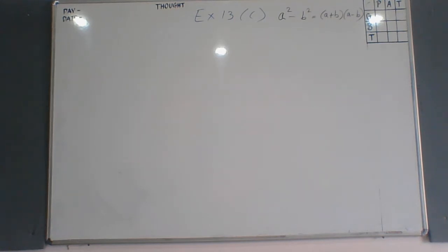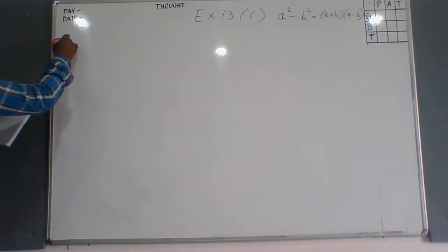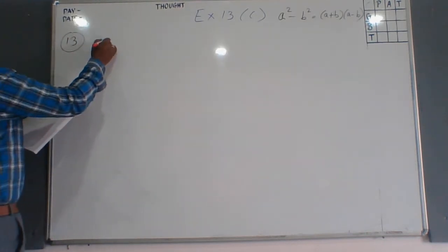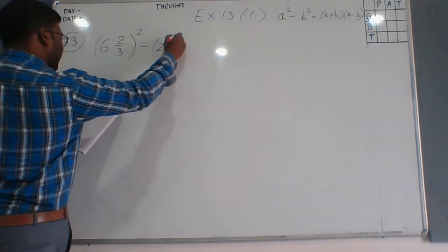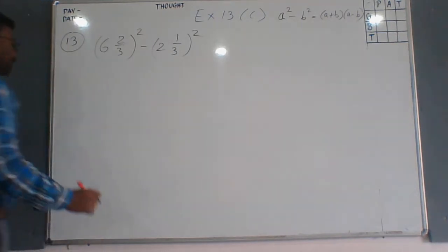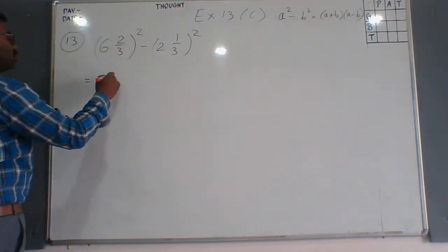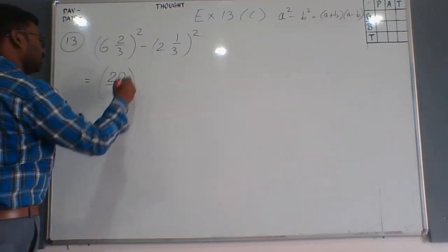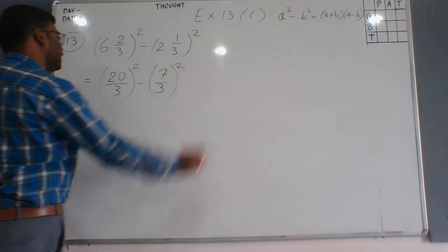Now let us solve question number 13. The question is (6⅔)² minus (2⅓)². We simplify: 6⅔ becomes 20/3, since 6×3=18 and 18+2=20, giving 20/3. And 2⅓ becomes 7/3, since 2×3=6 and 6+1=7, giving 7/3. So it is (20/3)² minus (7/3)².